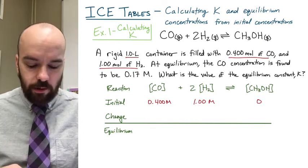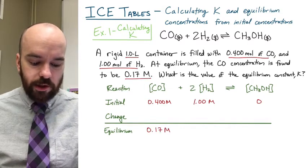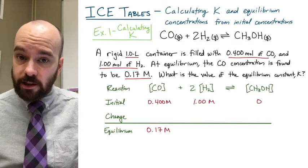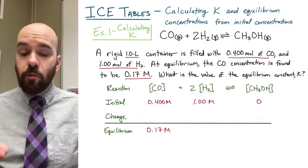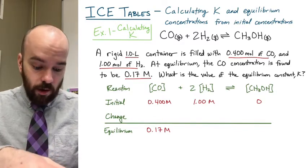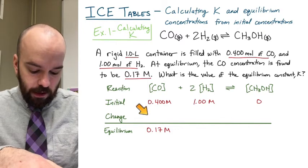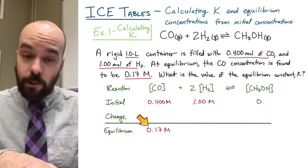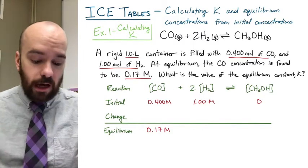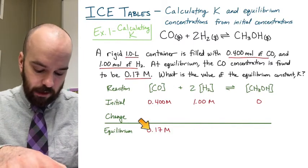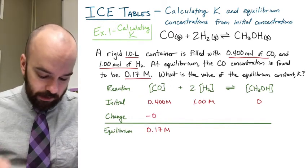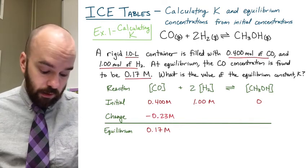The problem also tells us that at equilibrium, the CO concentration is 0.17 molar, so we substitute that into our equilibrium row. Now, if we know the initial CO concentration and the equilibrium CO concentration, we can subtract to find the change: 0.17 minus 0.4 gives us negative 0.23 molar. That negative sign just means the concentration decreased.